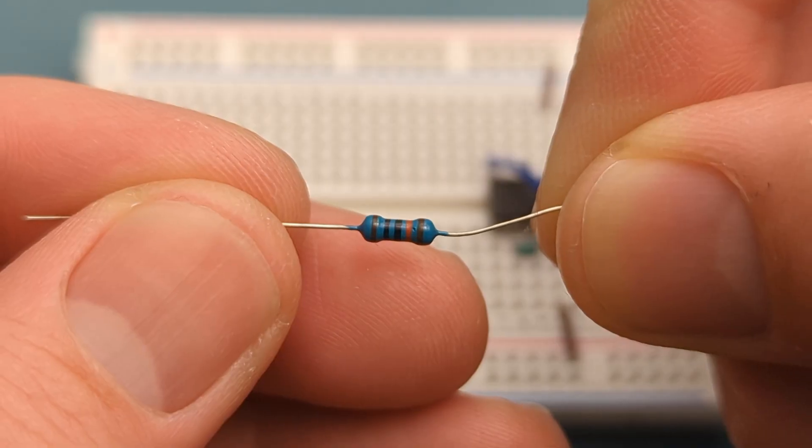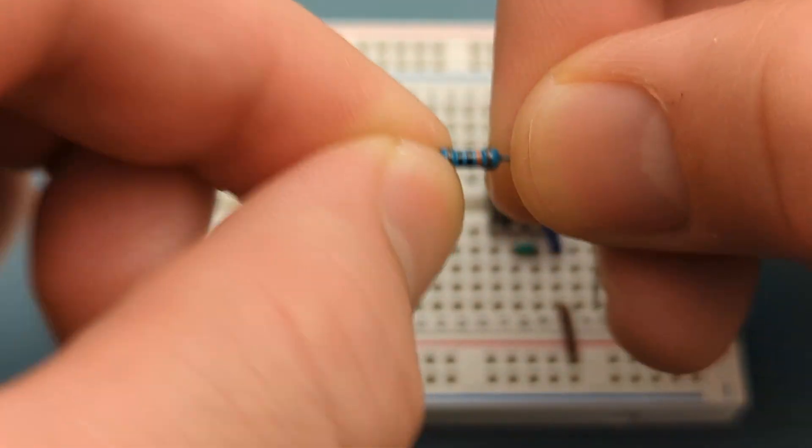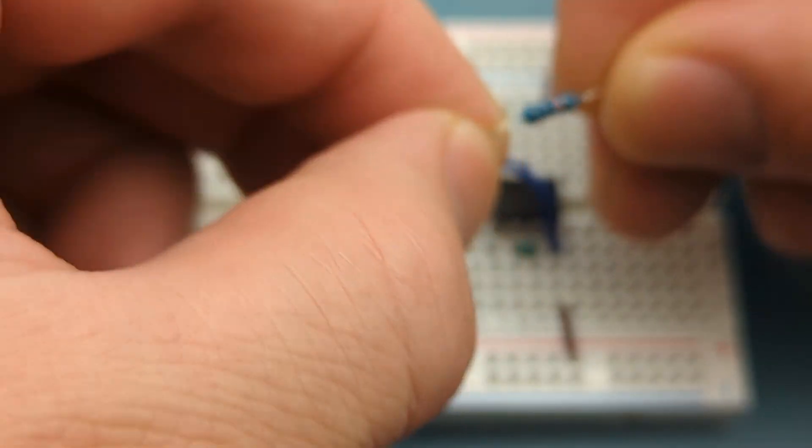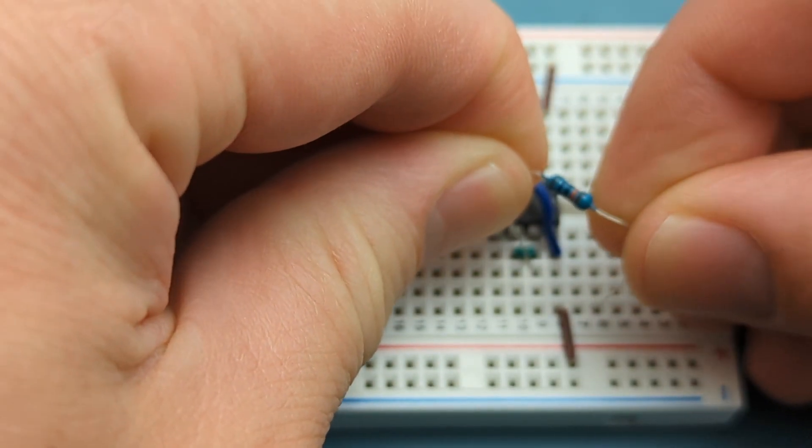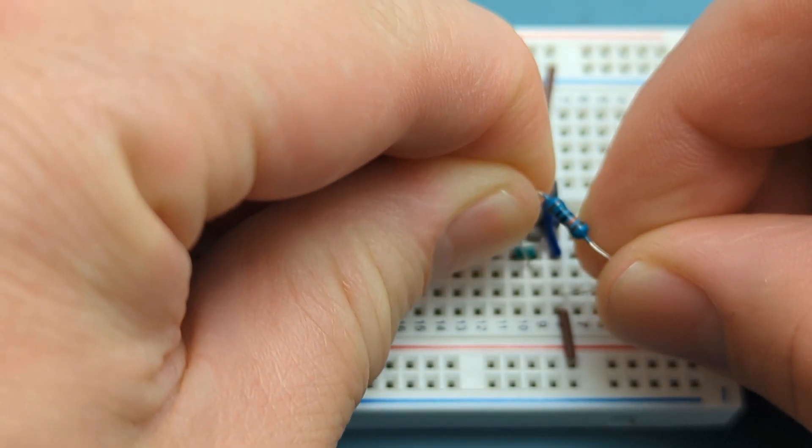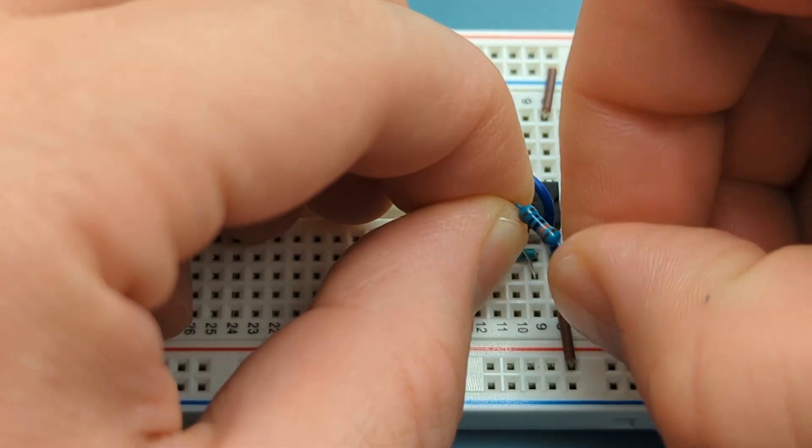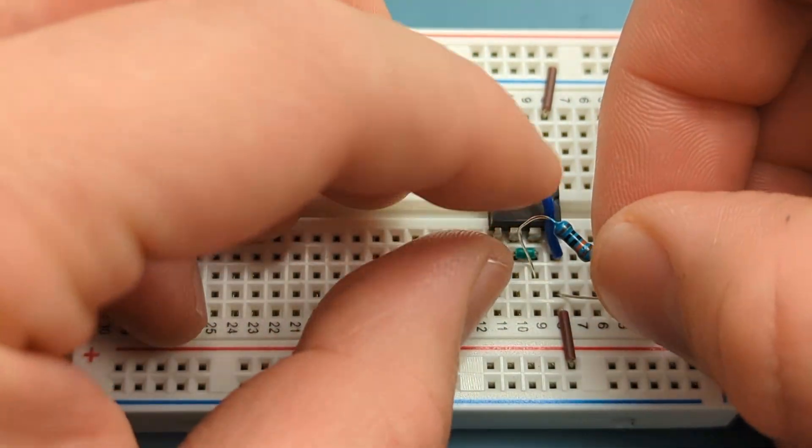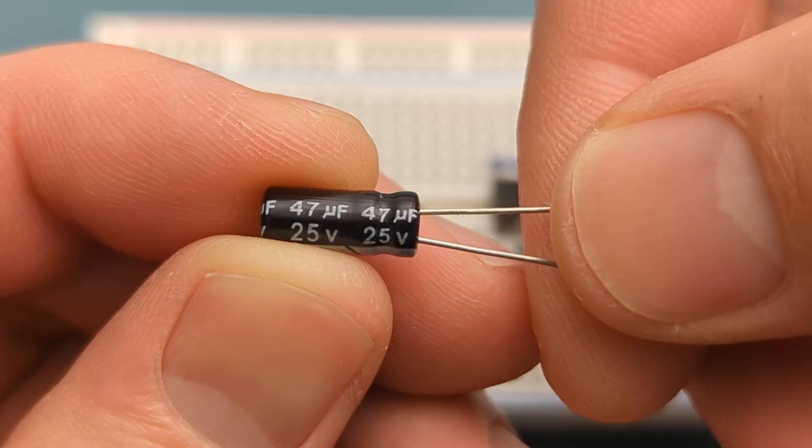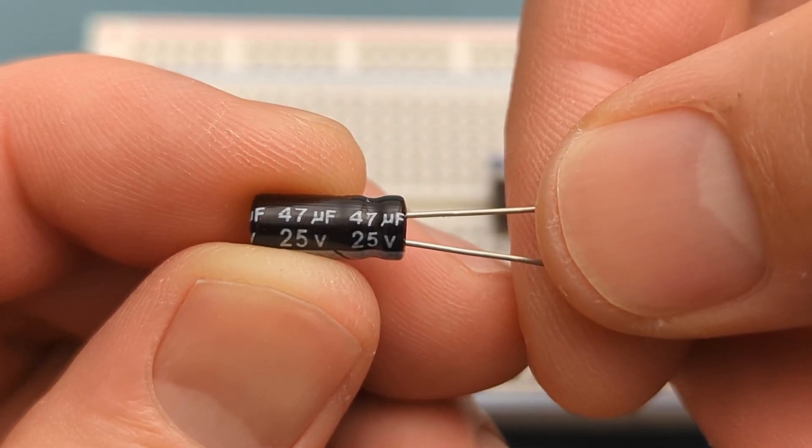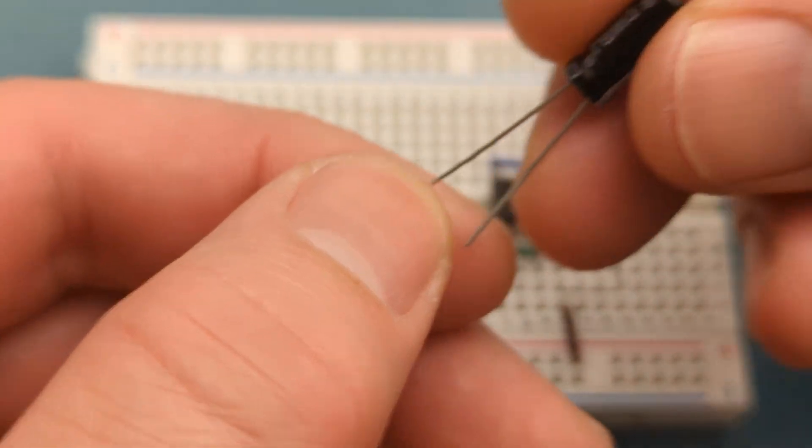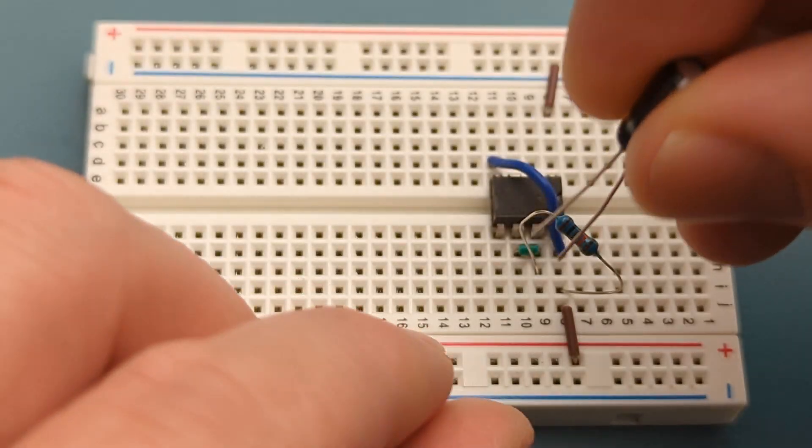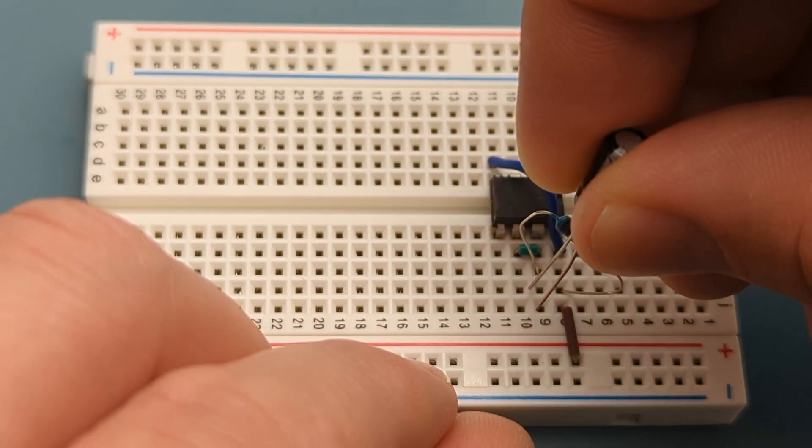Bend the ends of a 100,000 ohm resistor. Insert the 100,000 ohm resistor into pin 7 or discharge and pin 8 or VCC. Insert a 47 microfarad capacitor into pin 6 or threshold and the negative rail. The positive lead is in pin 6.